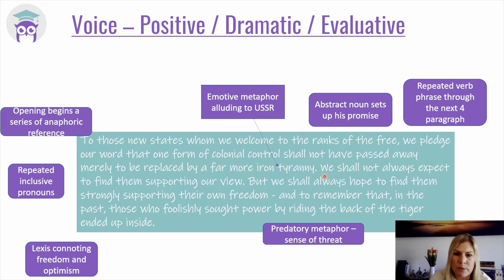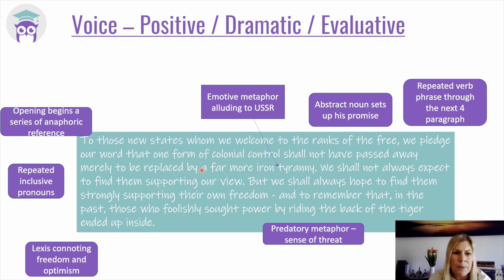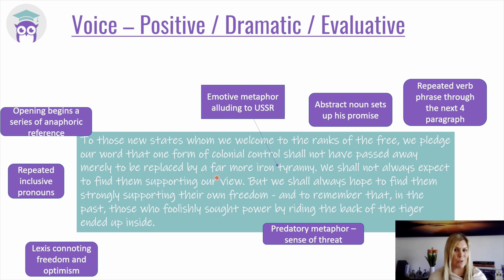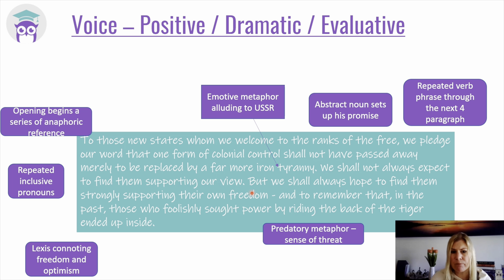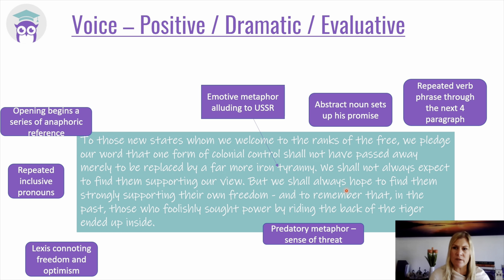He says 'we shall not always expect to find them supporting our view' — again, there's a little sense of balance there, a reminder that the ideologies may not match up — 'but we shall always hope to find them strongly supporting their own freedom.' It's reiterating this idea about choice and freedom, and a kind of sense of respect. Note how we've got frontal coordinate conjunctions that suggest opposing views, but it's softened by 'we shall always hope to find them.' So there's that sense of optimism. All of this positivity and balance is a really non-threatening approach.